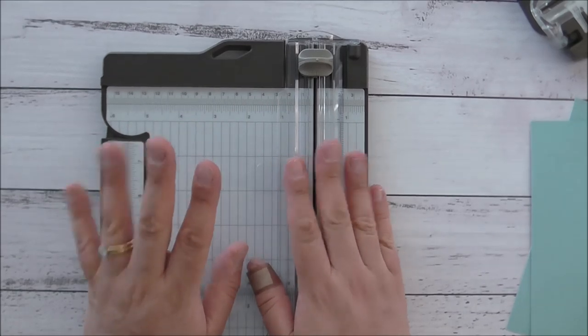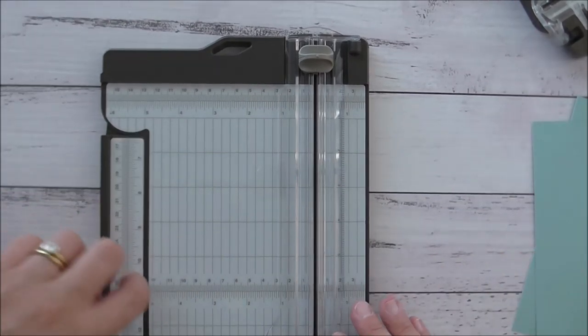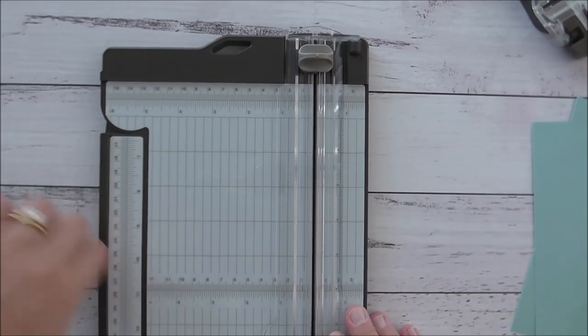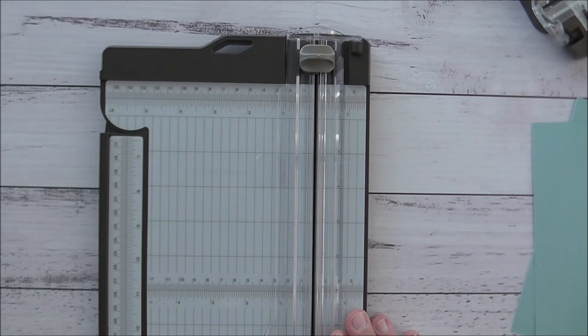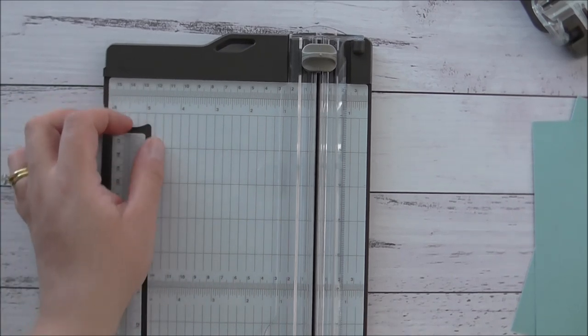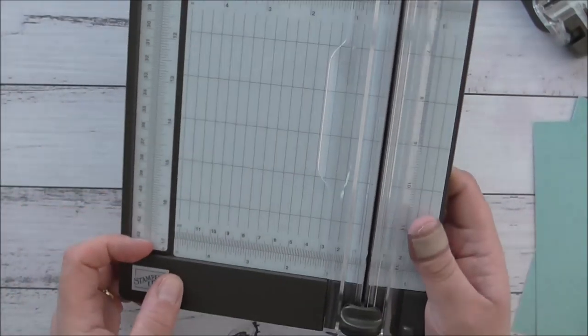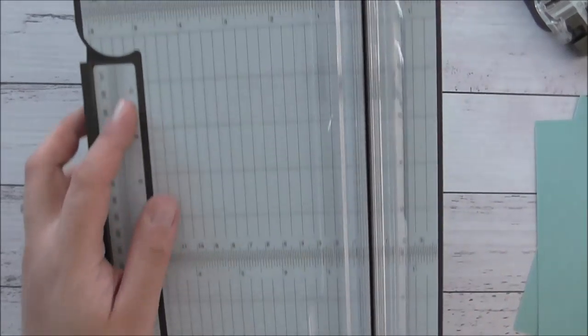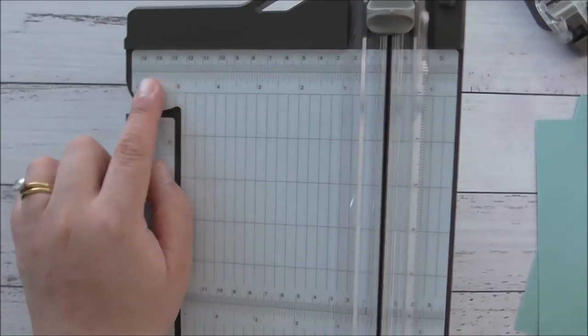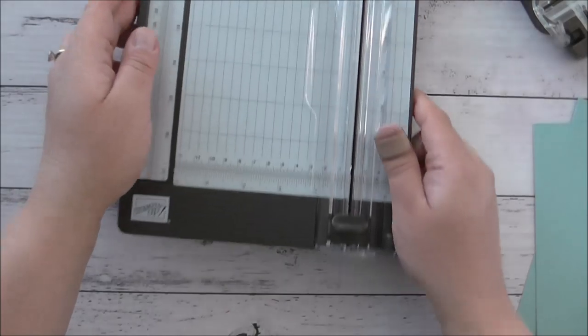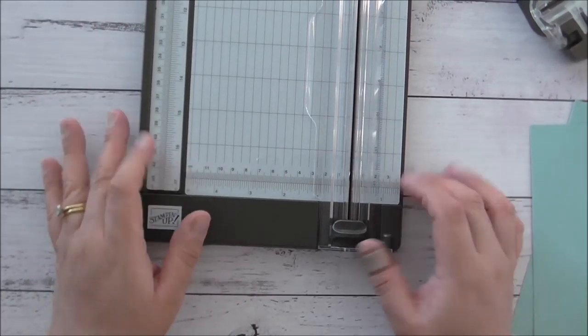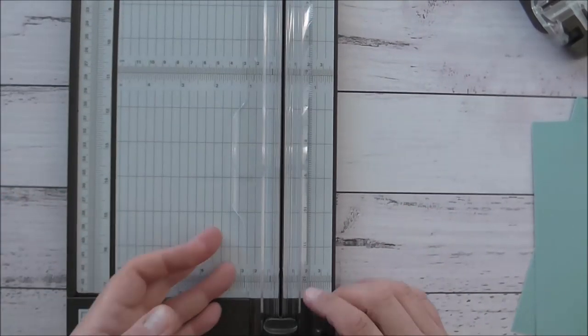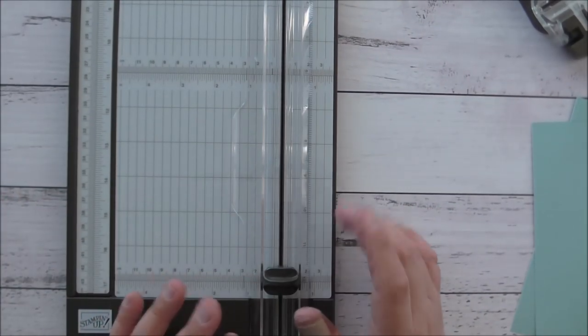So that's my honest review of the trimmer. My biggest problem is the lip thing that's on the edge here, so you can't just sweep your paper away. And that the measurements don't go all the way down to the bottom of the trimmer. They're just concentrated just up here to line up. So if you want to work from the bottom just for something different, you can't do that. That's a pain.